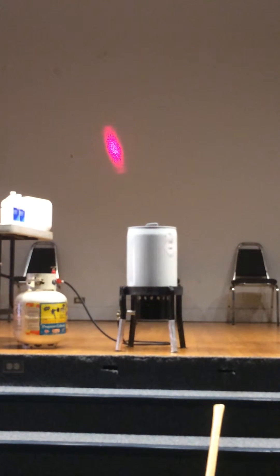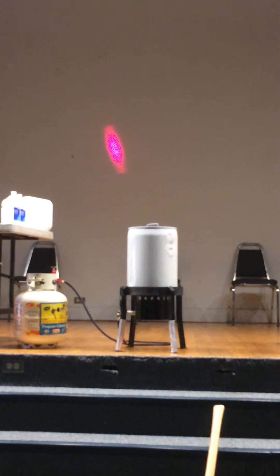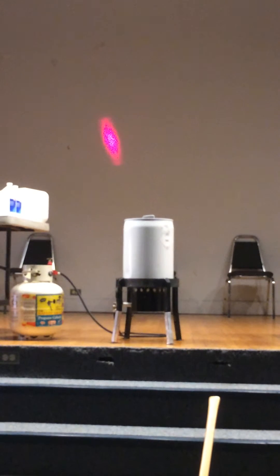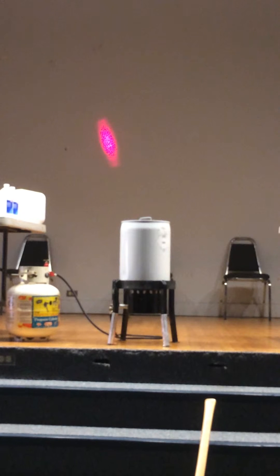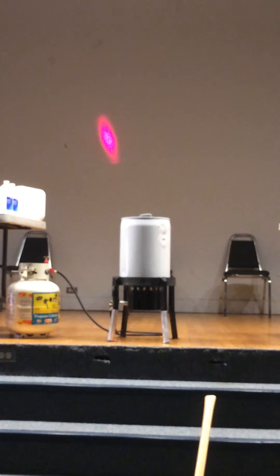So how many people are nearsighted in here? For all of you nearsighted people, as you look at the spot, rotate your head back and forth. And what do you see happening to the black spots? They move in the opposite direction.